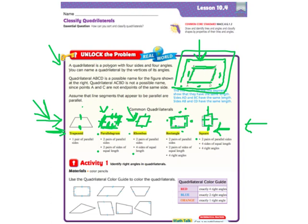So here's our activity. Identify right angles in quadrilaterals. Use the quadrilateral color guide to color the quadrilaterals. So we're going to use red if there are exactly four right angles.